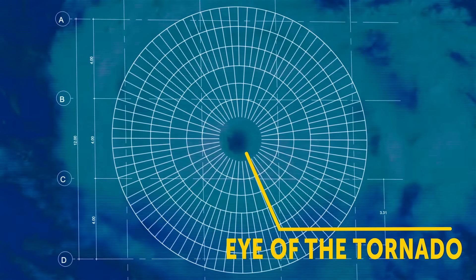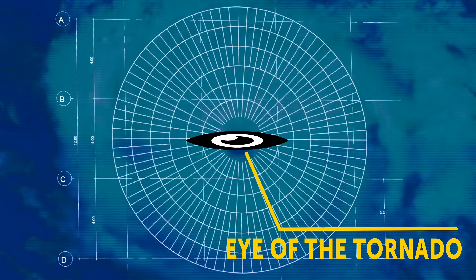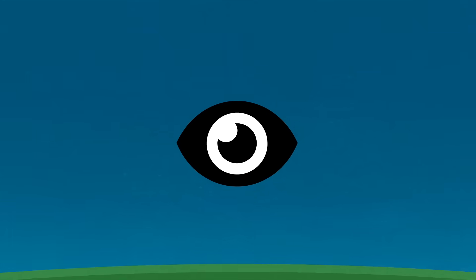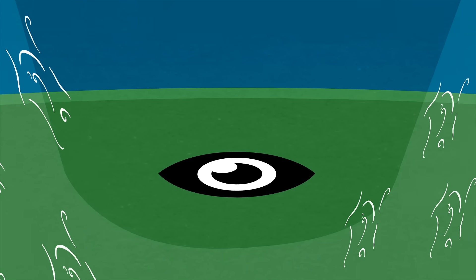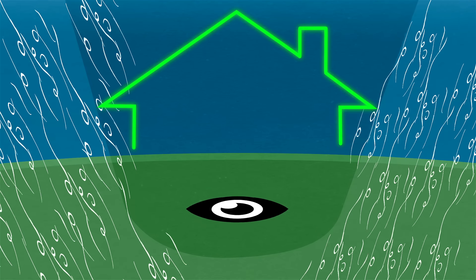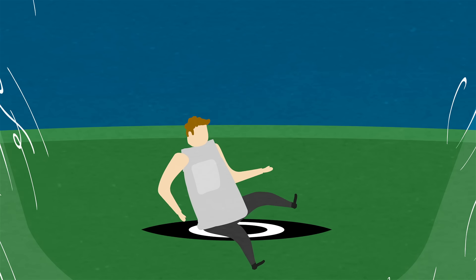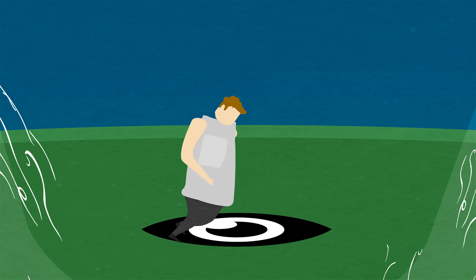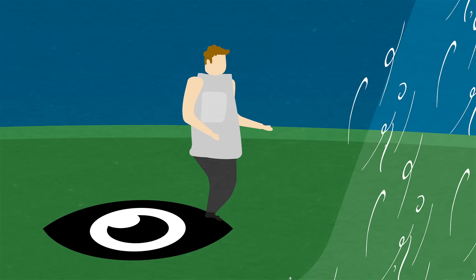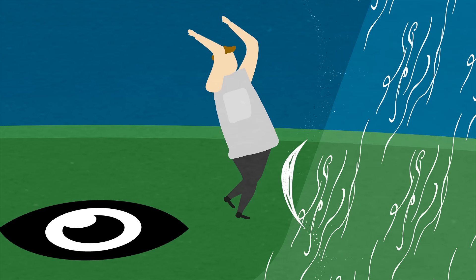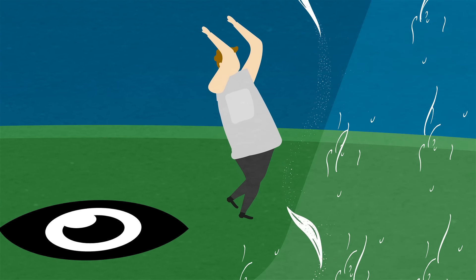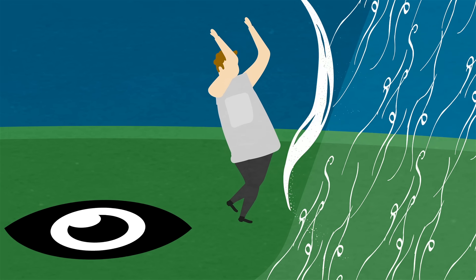It's called the eye of the tornado or the hurricane, and it's basically the safest place to be when the phenomenon comes at you. Well, apart from being thousands of miles away from it, of course. Unfortunately, you'll have to be really lucky to get into the eye and wait until the weather calms down. The eye wall has the strongest winds, and if you get too close to it, you'll probably be thrown around like a toy.